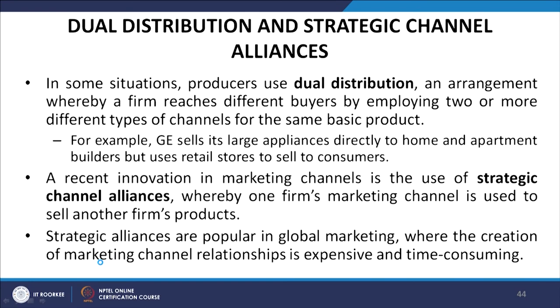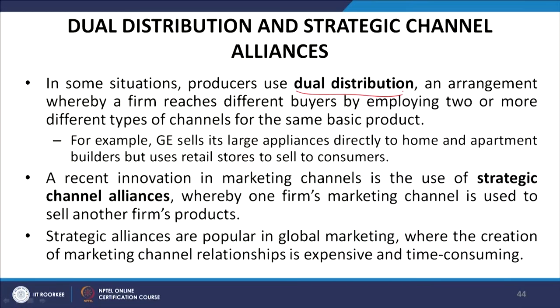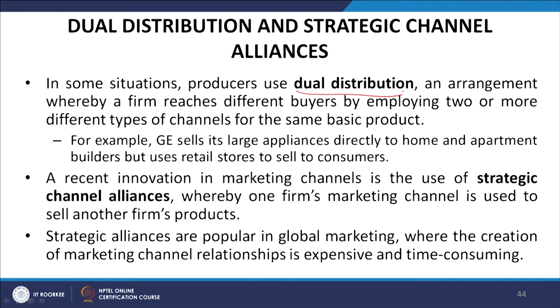Some producers use dual distribution — an arrangement whereby a firm reaches different buyers by employing two or more different types of channels for the same basic product. For example, GE sells its large appliances directly to home and apartment builders but uses retail stores to sell to consumers. A recent innovation is the use of strategic channel alliances, whereby one firm's marketing channel is used to sell another firm's products. Strategic alliances are popular in global marketing where creating channel relationships is expensive and time-consuming.